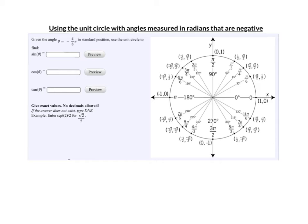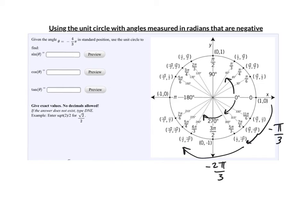Next one: negative 4 pi over 3. Pi over 3 is right there — that's counting by 60 degrees. So I'm going the negative direction now. Pi over 3 — that's 60 degrees right there, I'm at 300, and that's negative pi over 3. Another 60 degrees, another pi over 3 — I'm at 240, and that is negative 2 pi over 3. And I'll go another 60 degrees — right there is negative 3 pi over 3, which ends up being negative pi. And one more 60 degrees, and there is negative 4 pi over 3.